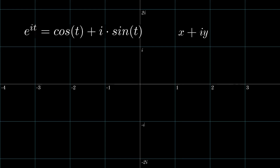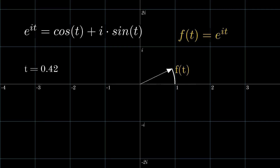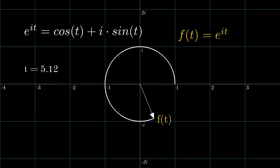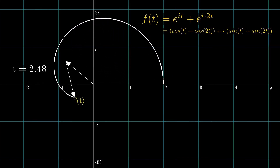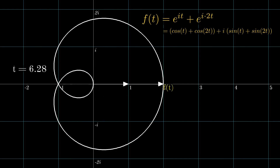The famous Euler's identity e to the it equals cos t plus i sin t builds a link to this parametric form of function. Like in a parametric function drawing a circle with cos t as the x-coordinate and sin t as the y-coordinate, here the function f — that is e to the it — gives out a complex number defined as cos t plus i sin t. When we plot these complex numbers into the complex plane, we get these rotating vectors drawing out a circle. If we add a new vector, it corresponds to adding a new term in this complex function f.